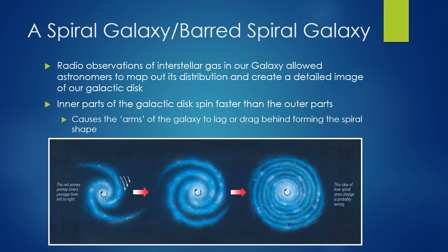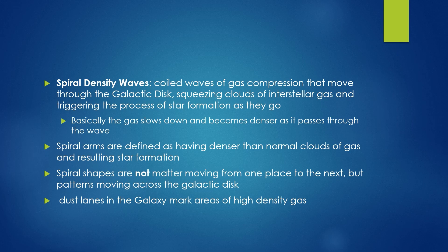The idea shown in an artist's perspective image creates an issue known as differential rotation — meaning the galaxy arms could eventually coil up and disappear. If the arms were tied to the galaxy somehow, spiral galaxies would be very short-lived and wouldn't have the number of stars and nebulae that we see. The leading explanation for the existence of spiral arms is spiral density waves — coiled waves of gas compression that move through the galactic disk, squeezing clouds of interstellar gas and triggering the process of star formation as they go. The gas essentially slows down and becomes denser as it passes through the wave, basically creating a galactic traffic jam, leading to spiral arms defined by denser than normal clouds of gas and new star formation.